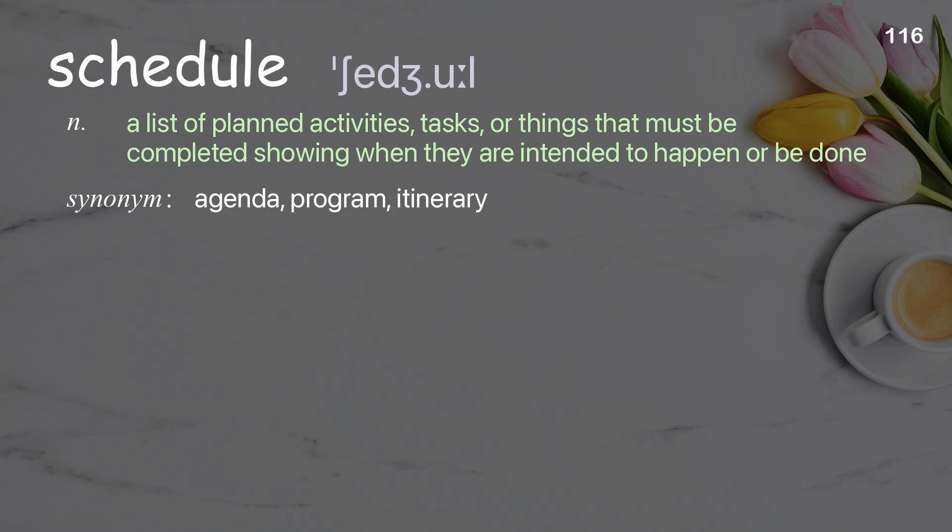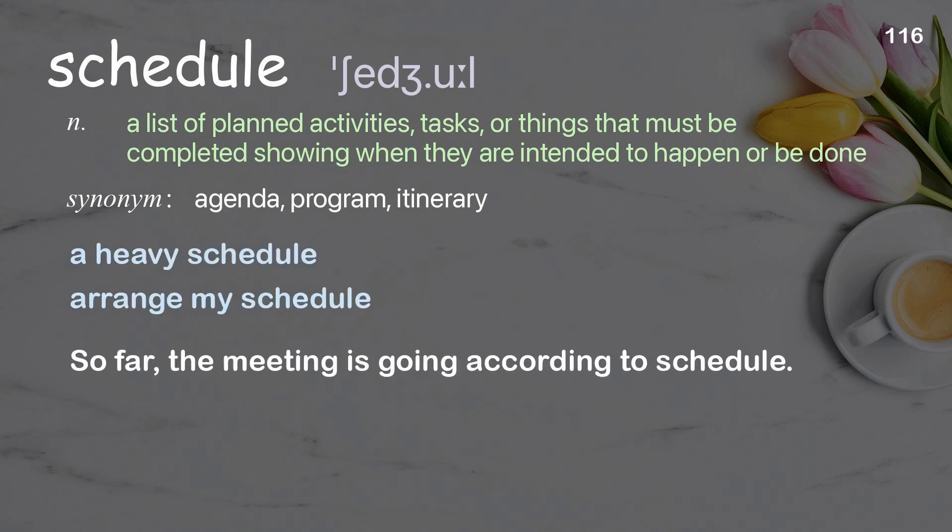Schedule. A list of planned activities, tasks, or things that must be completed showing when they are intended to happen or be done. Examples: a heavy schedule, arrange my schedule. So far, the meeting is going according to schedule.